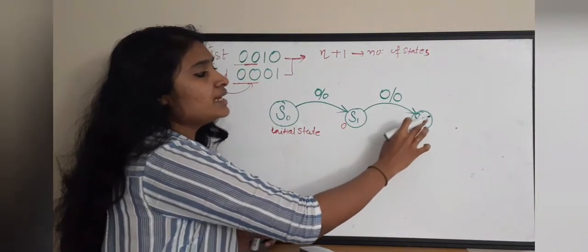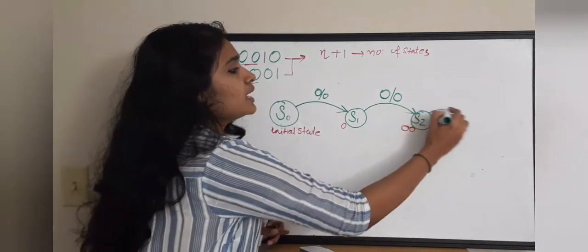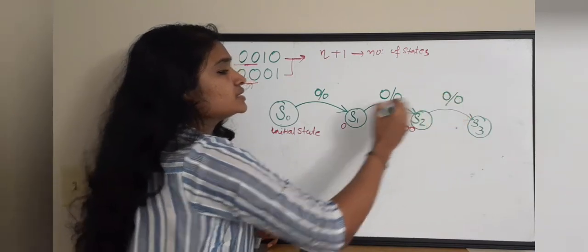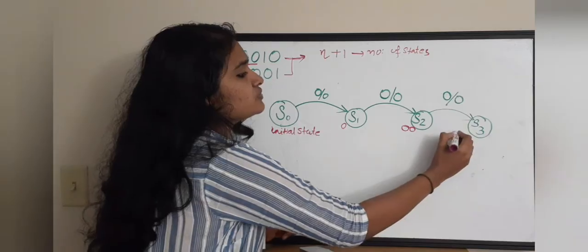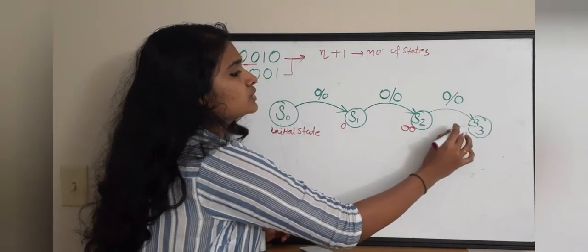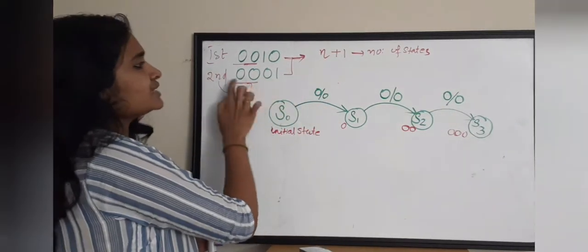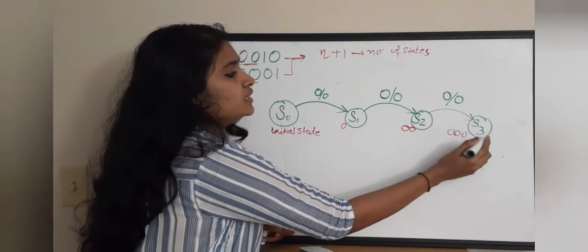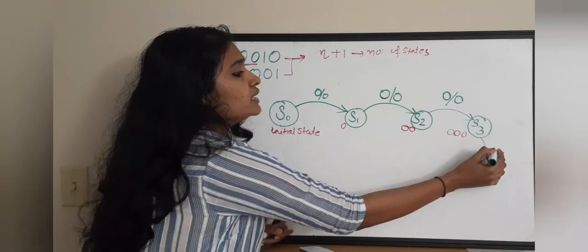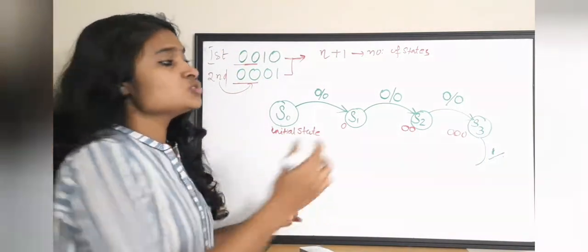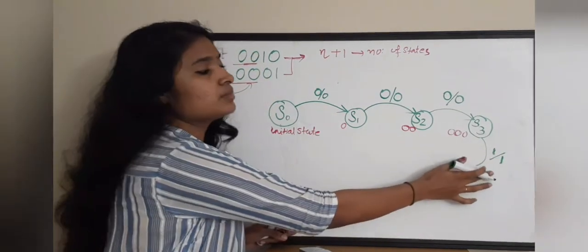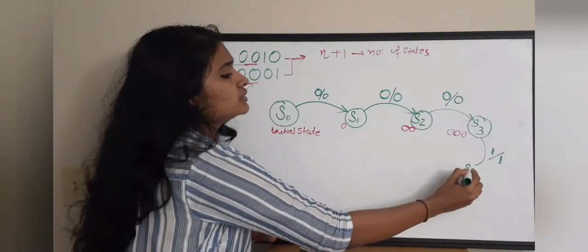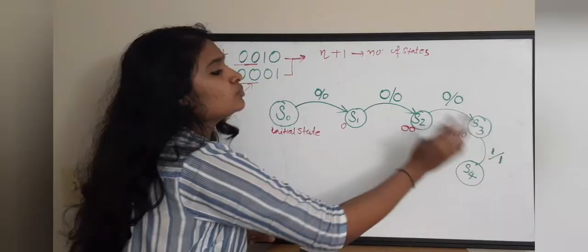From S2, if we receive a 0 we move to S3, where the sequence held is 0 0 0 and output is still 0. For the second sequence we need 0 0 0 followed by 1. So in S3, if we receive a 1, the second sequence is completely detected, the output becomes 1, and we move to S4.